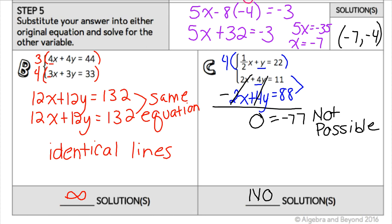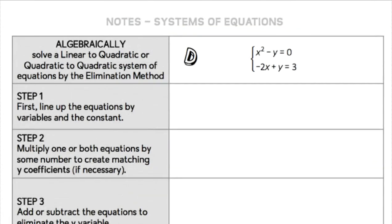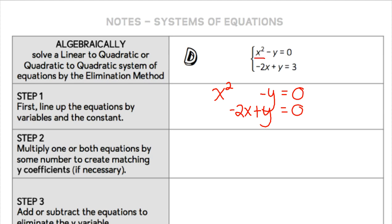We are going to practice with a couple more examples, but this time we're going to look at two equations that are just a little bit different. We're going to solve a system with one linear equation and one quadratic equation, still using the elimination method. We're going to start the same way — line up the equations by their variables and constants. What's going to be different here is I have an x squared in one equation, so that x squared does not match up with anything in the second equation. But then I have a minus y, and it equals a constant. To line up the second equation, I have a negative 2x that doesn't match anything in the first equation, so I'm going to write it by itself, put my plus y here, and it's going to equal 3.